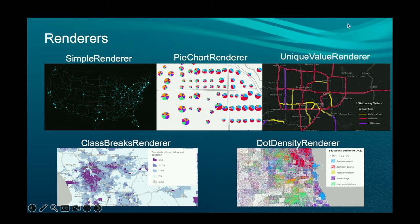You also have a unique value renderer for categorical data — for example, the type of highway or jurisdiction: interstates, US highways, state highways — colored differently based on a category or string field. Then there are other styles like the pie chart renderer, useful when you have subcategories belonging to a larger one, like demographic data — population by race or ethnicity, or educational attainment. You can also use dot density to do the same thing for polygons, randomly drawing dots within the polygon to show population density, with colored points to show subcategories.